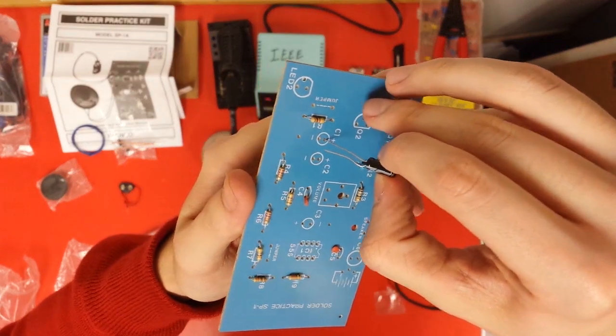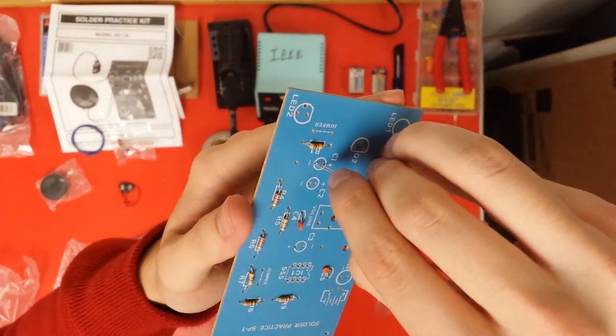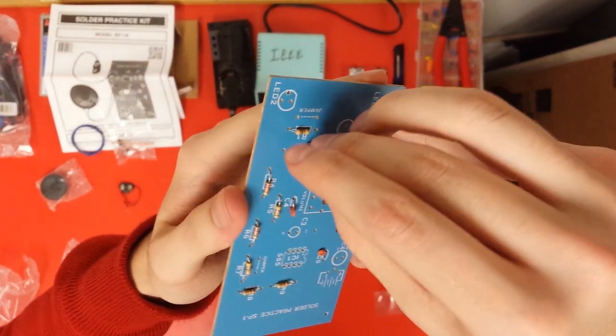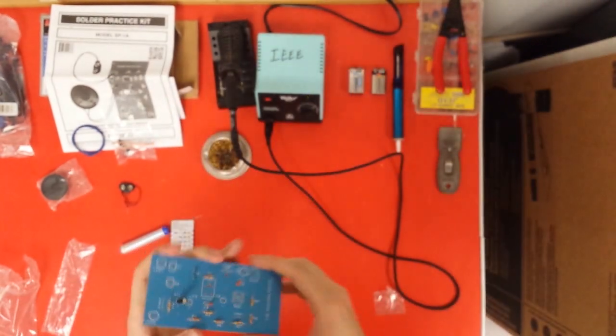So you're going to put the negative dash according to the negative one here. You're going to match kind of, just match to the picture. And you're going to put it through. And the same with the other one.